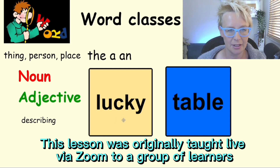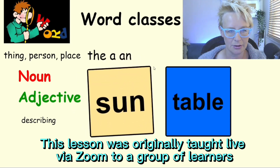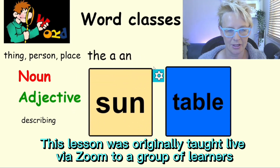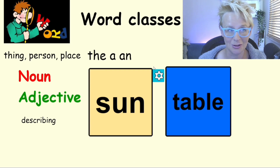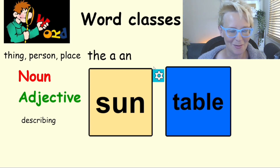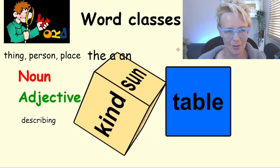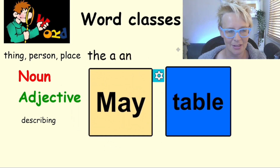We're going to roll this dice and see what it lands on. The word it lands on is 'son' — adjective or noun? Yes, it is a noun because it's the name of a thing. Let's do it again and see what we get this time.